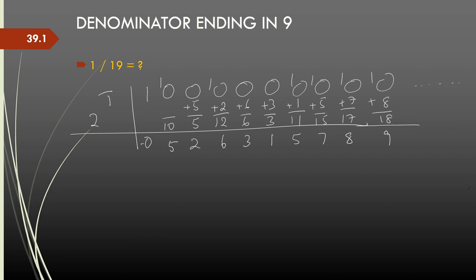So if we look at the pattern — for 1 by 19, we always take 1 more than the digit next to the 9. So that is 2. In every step, I will divide by 2. So I will start dividing 1 by 2. 1 by 2: 2 goes 0 times.